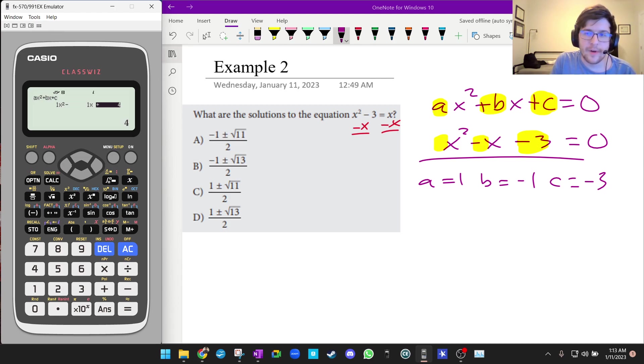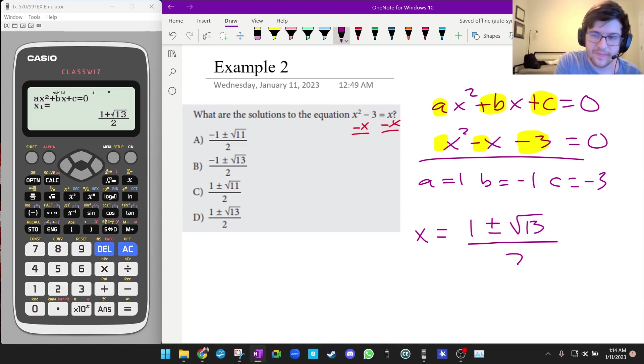Now we're going to do -3, enter. Then I press enter. That is really helpful. If I press down, I get (1 - √13)/2. So we can write that as (1 ± √13)/2. The answer is C. Really helpful—the calculator pretty much did all the work for us.